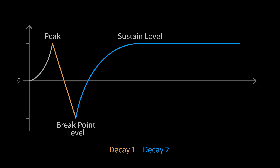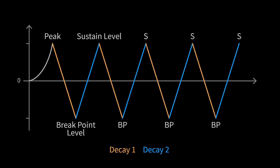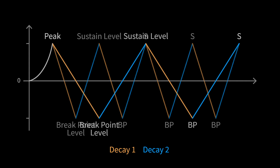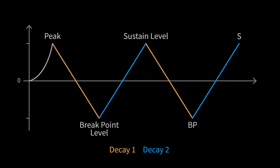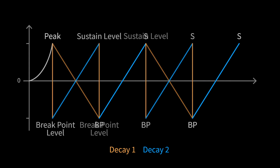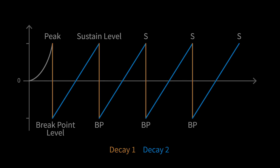Now let's go to the new loop function for envelope C. By creating a loop between DK1 and DK2, we get a very flexible LFO kind of effect. By manipulating the times of both decays, the breakpoint and the sustain level, we have access to a big variety of waveforms.